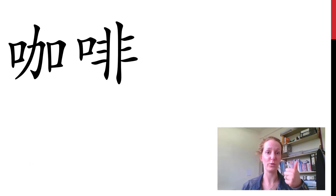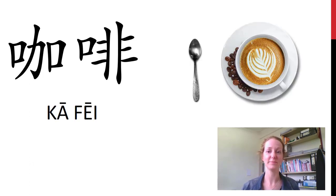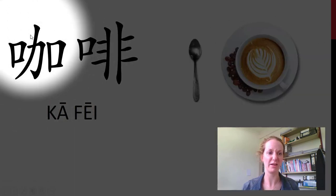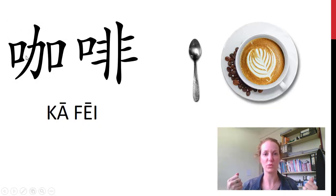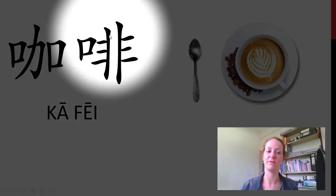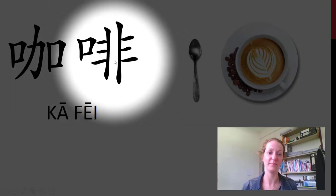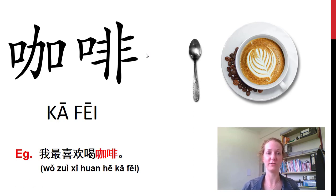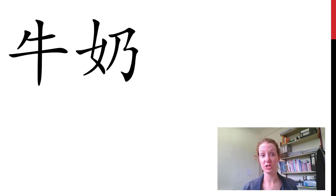下一个, 这是什么? 我最喜欢这个饮料. 这是咖啡. Any guesses? This is a loanword from English, so you can see lots of mouths here — think of the mouths giving you lots of strength when you drink coffee. Another 口 here, and 非 from 非常好 gives the sound. 咖啡! 我最喜欢喝咖啡.